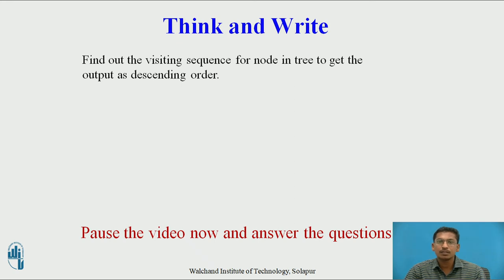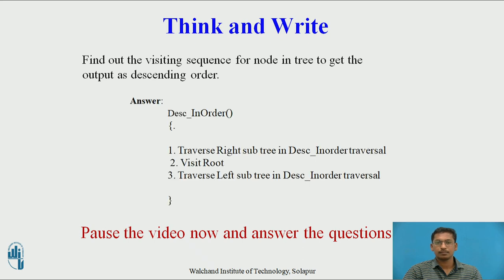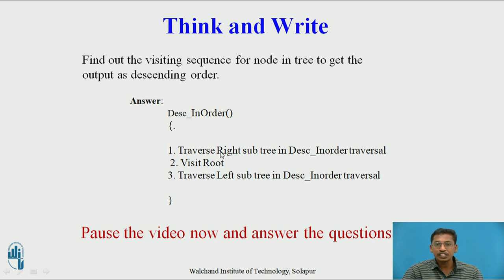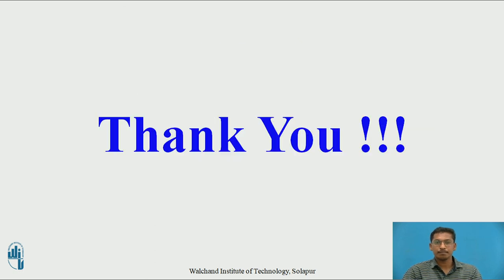Another question: find the visiting sequence for nodes in the tree to get output in descending order. As we know, in-order traversal gives ascending order output. To get descending order, we modify in-order traversal: first traverse the right subtree, then visit root, then traverse the left subtree. These changes to in-order traversal give output in descending order. Thank you.